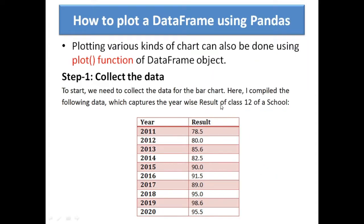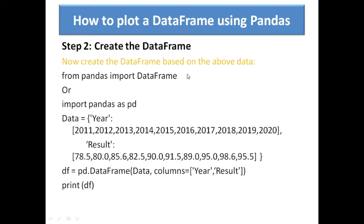As in the previous video, you have seen on the same DataFrame — we have the same dataset — we drew a line chart. That was the year-wise result of a particular school of class 12. The data collection is done in the form of a DataFrame, having year as the index and result as the dataset. Now we will use the plot method. First, collect the data and create a dataset in the form of a DataFrame: data is a dictionary with a 'year' key given as a list, and a 'result' key given as a list. For 2011 to 2020, the DataFrame is created with column headings year and result, then printed.